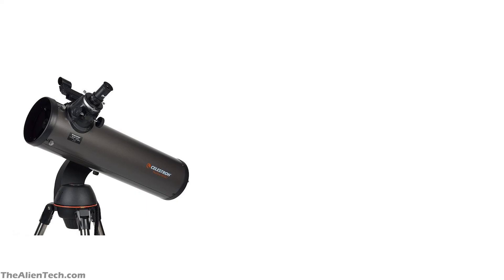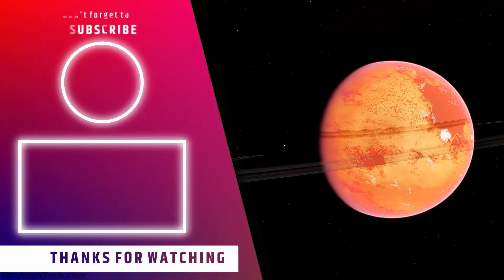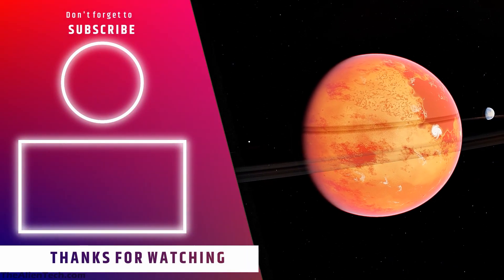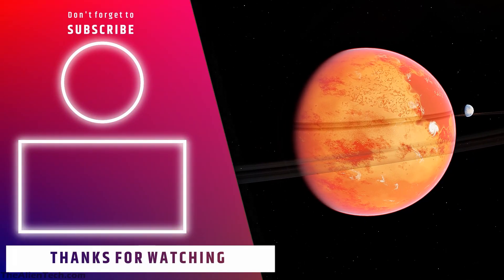Disadvantages of reflector telescopes: they are open-tube telescopes, so they gather a lot of dust and need to be cleaned quite often. The mirrors also need collimation, which can take anywhere from 5 to 30 minutes depending on the type of reflector you have. Some good refractor and reflector telescopes are mentioned in the description — check them out, and don't forget to subscribe to the channel for more such content.